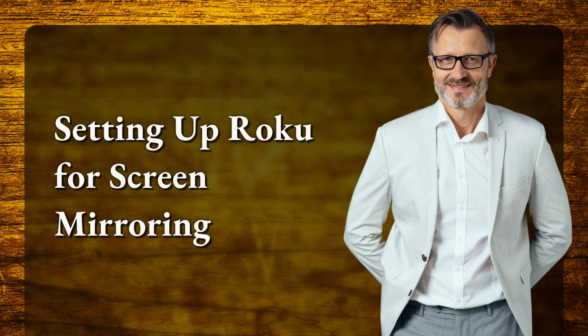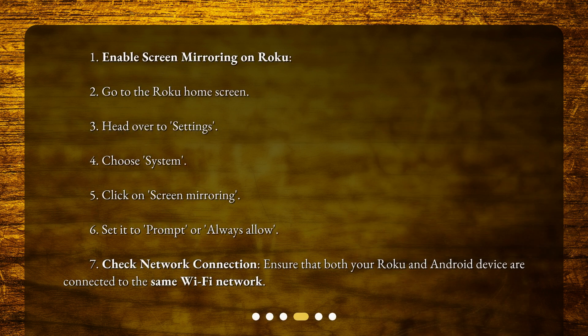Now set up Roku for screen mirroring. Go to the Roku home screen, head over to Settings, choose System, then click on Screen Mirroring and set it to Prompt or Always Allow. Also ensure that both your Roku and Android device are connected to the same Wi-Fi network.